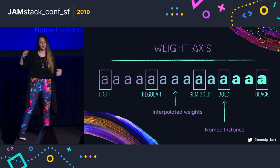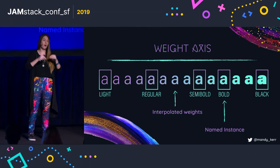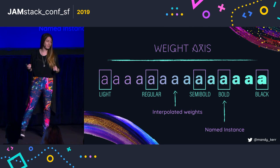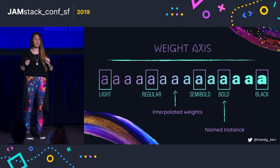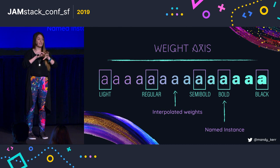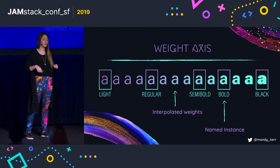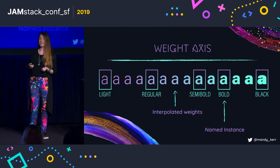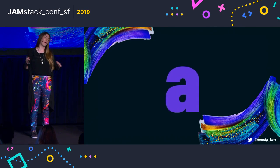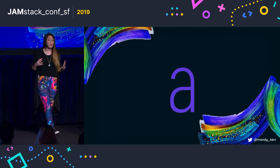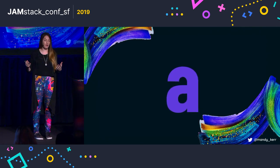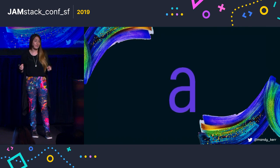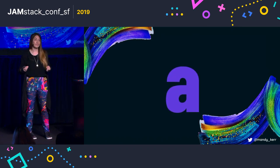Along that axis it has different levels of extremes for that style, so you might have a lightweight to a really heavy weight. While we still have access to things like regular and bold along a weight axis — these are named instances — variable fonts can be interpolated, meaning we have access to all of the ranges and values in between those standard weights. And because they can be interpolated, we can animate them and create really beautiful, smooth transitions between different styles, and this applies to combinations of axes as well.